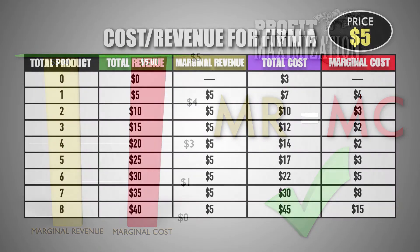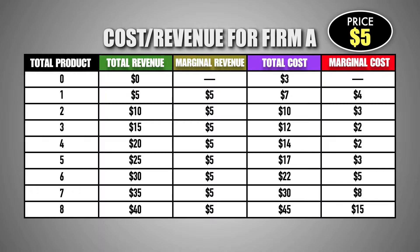Let's go back to the typical firm in the market for good M and find the firm's profit-maximizing output. The marginal revenue gained by the firm when selling the first unit of good M is $5, while the marginal cost of producing the first unit is only $4. Because this unit has a marginal revenue that is greater than its marginal cost, it's profitable for the firm to produce it. When selling the second unit of good M, the marginal revenue gained by the firm is $5, while the marginal cost of producing the second unit is only $3. Because this unit has a marginal revenue that is greater than its marginal cost, it's profitable for the firm to produce it.